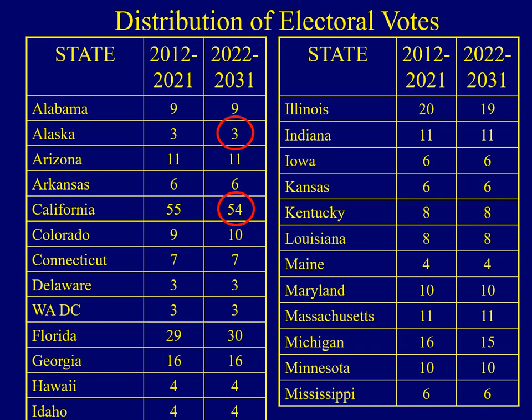The largest state in the union is California with 54 electoral votes — it's been the largest in terms of population for many years. Florida went from 29 electoral votes on the previous census to 30, because more people are moving to Florida and its population is growing faster than other states. Michigan in the past had as many as 21 electoral votes, but in the last census we went from 16 to 15 electoral votes.